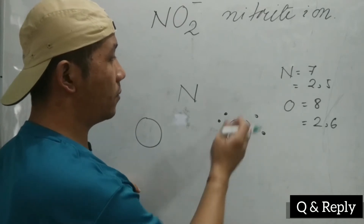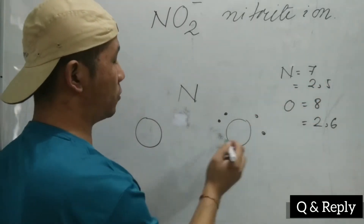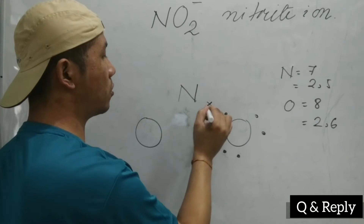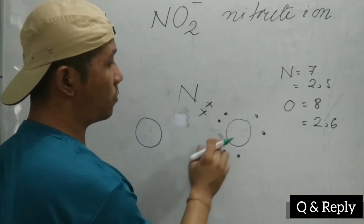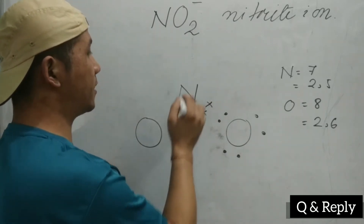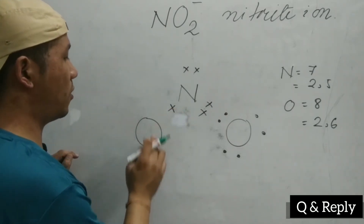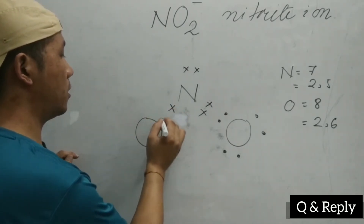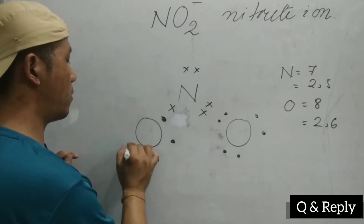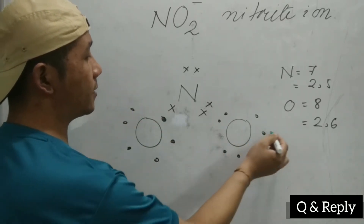Nitrogen also has five valence electrons. We represent the electrons here along with nitrogen and the oxygens. At the same time, nitrogen will share one electron with each of the oxygens. And oxygen also will share — one, two, three, four, five, six — electrons in this case.